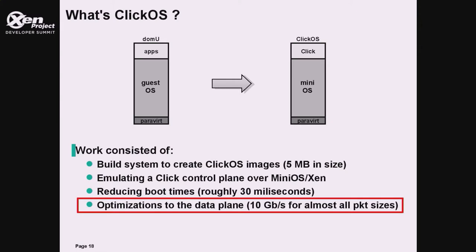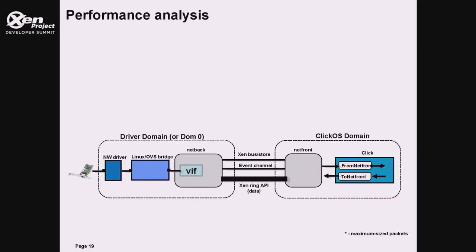I will focus on the last item, which we think has the highest contribution for the Xen community. We started by doing a performance analysis of the Xen I/O subsystem. Let me give you a quick overview of how it's organized. First we have a NIC — in our case, we use Intel ixgbe 10-gigabit NICs. Then we have DOM0, which hosts a network driver. This driver is attached to a software switch.